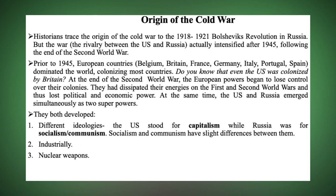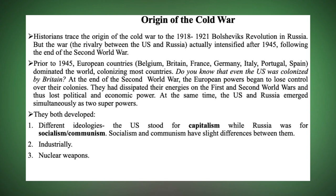So two world superpowers emerged — one from the Western side of the world and the second from the Eastern. This led to the formation of the Western bloc and the Eastern bloc. The Western bloc was led by the United States of America, while the Eastern bloc was led by Russia, or the Soviet Union.